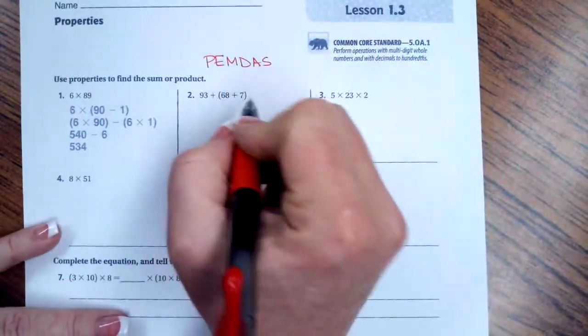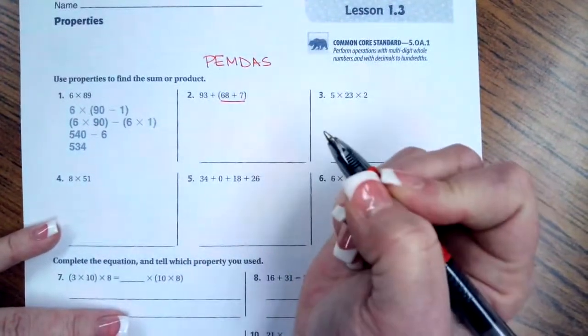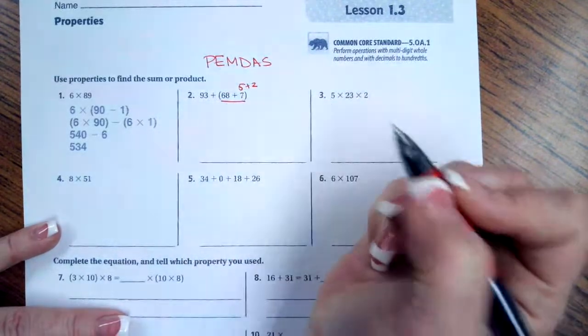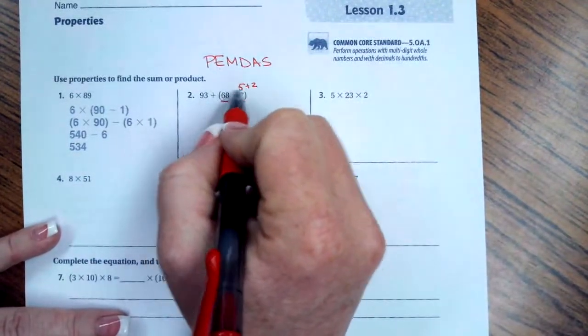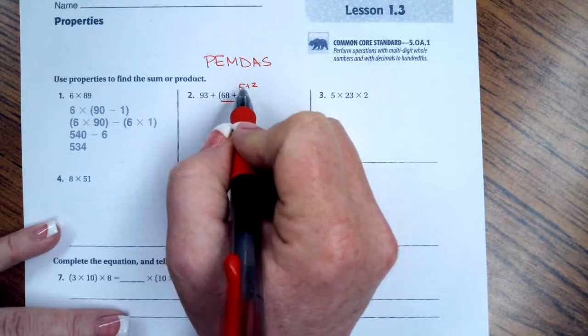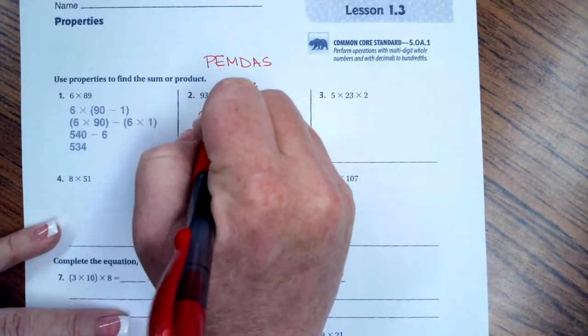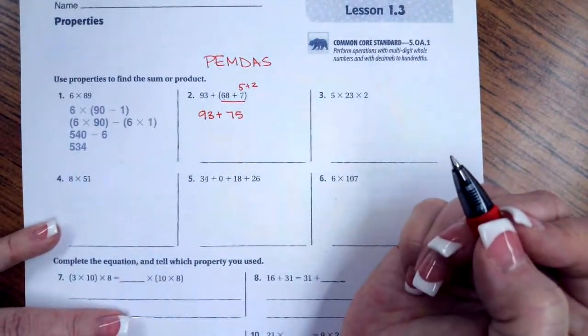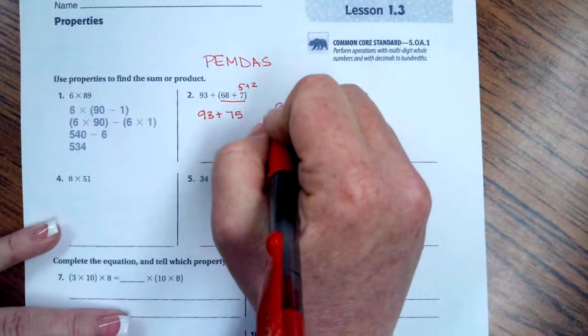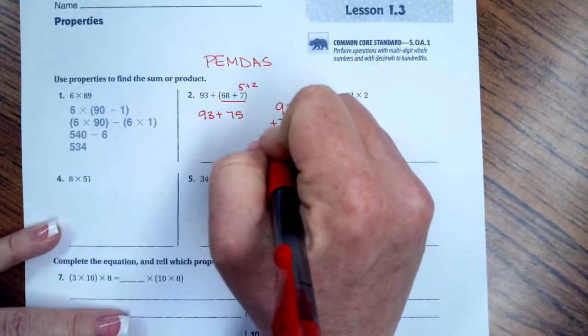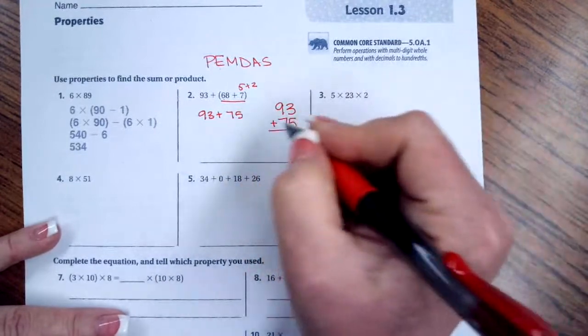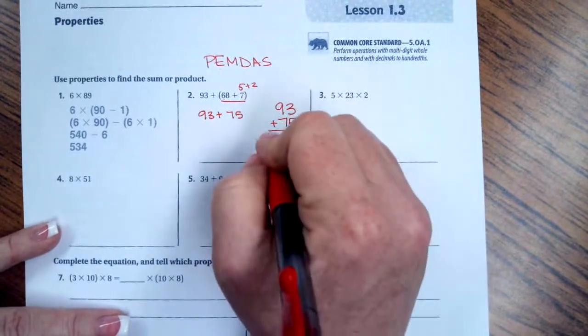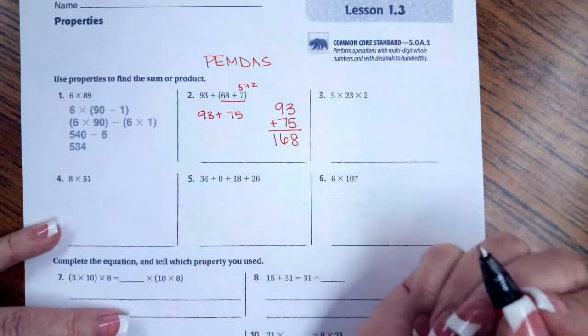So the first thing that we need to do here is our parentheses. So we're going to do these guys. Now 7 is the same thing as 5 plus 2. So if I do 68 plus 2, I get to 70, add another 5, that's 75. So now I'm going to rewrite what I had and putting in the 75. So now I'm going to come over here and write it one above the other vertically because it's really hard to add when they're sideways. So 3 plus 5 is 8, 9 plus 7 is 16. Your answer is 168.